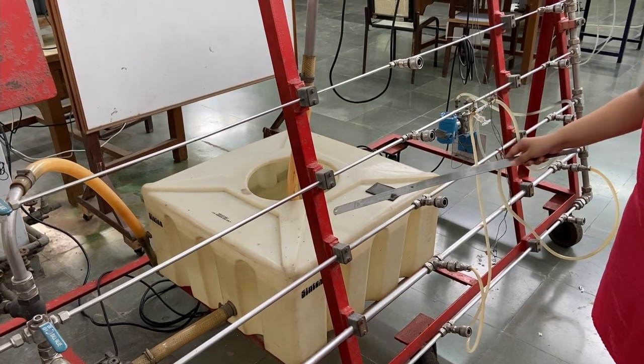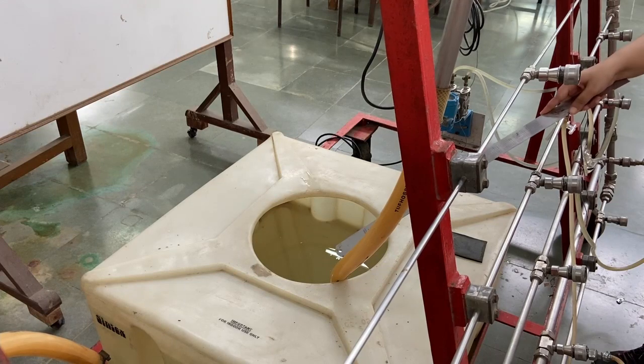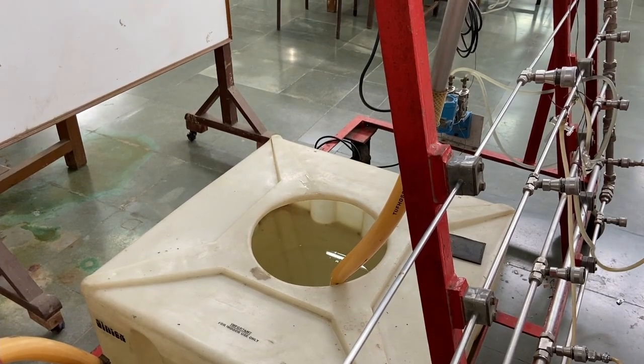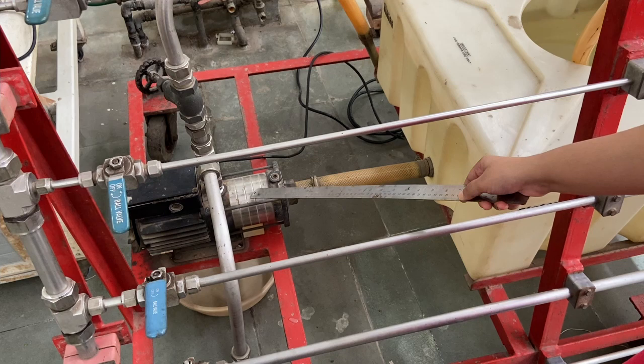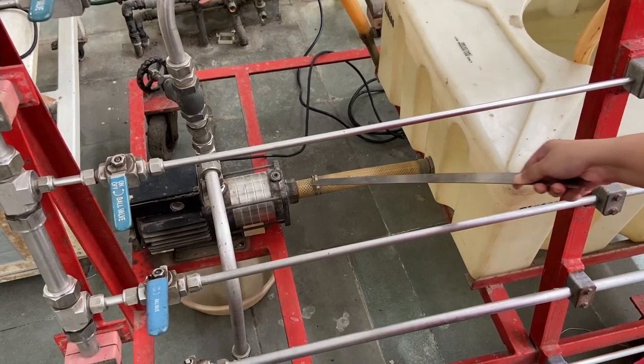So here we have the tank which is the source and sink for the water flowing through the network. We have a multi-stage centrifugal pump to circulate the water within the network.